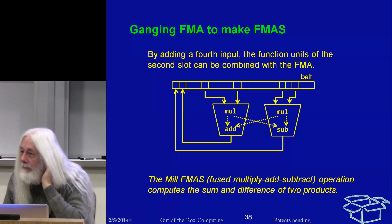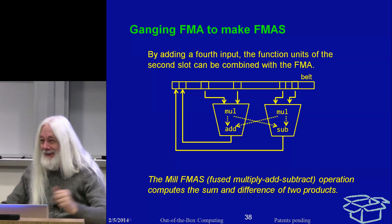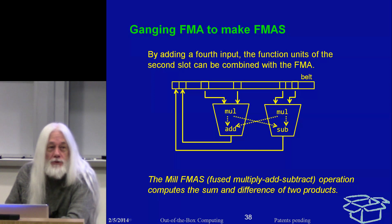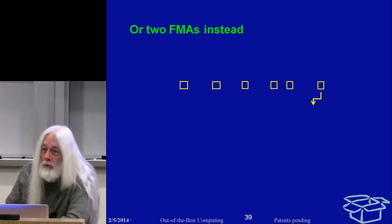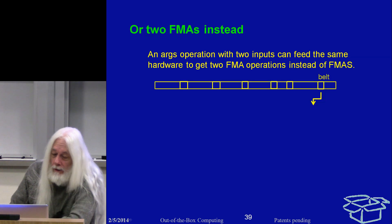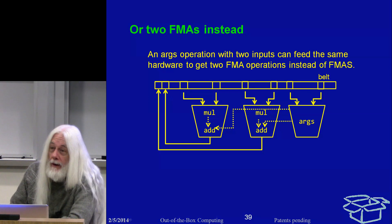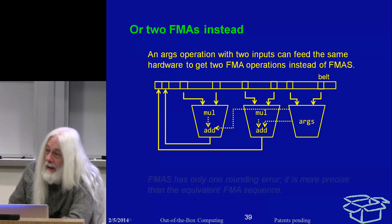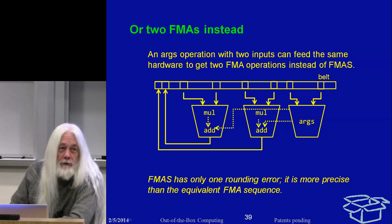An audience member asks: is that an FFT butterfly? Yes, fancy that. In any case, the sum and difference of two products, making use of the functional units that are already there. Alternatively, you could use that same hardware — two multipliers and two adders — to do two FMAs with six inputs. FMA has only one rounding error and is consequently advantageous over the equivalent simple multiply-add sequence.